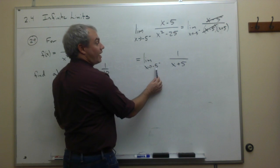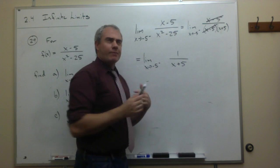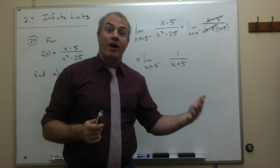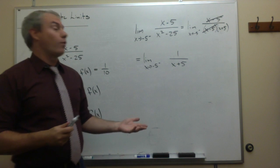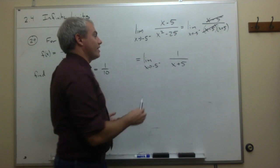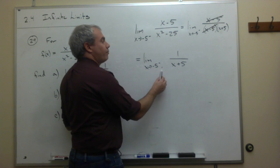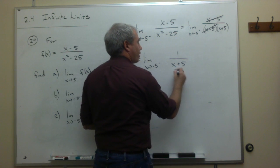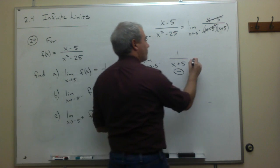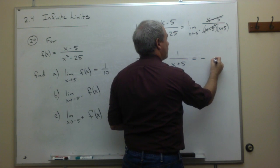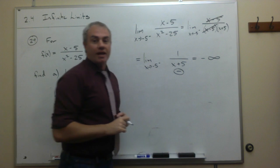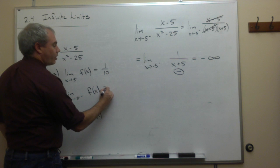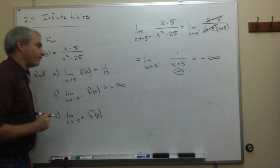To determine which, let's take something slightly smaller than negative 5 — something like negative 5.1. If we take negative 5.1 and add 5, that's a negative number, and 1 divided by a negative number is negative. So for part B, the limit is negative infinity.